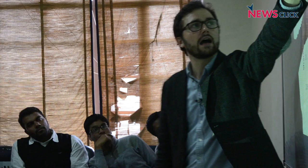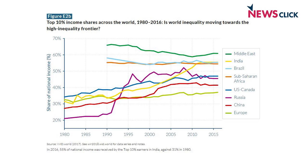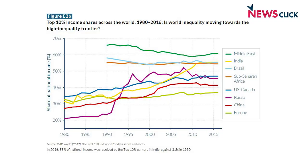Unfortunately, we don't have enough data for the longer historical period. But you can see that these regions seem to set what we could call a high inequality frontier, in the sense that levels of inequality are so high that it is hard to go even higher, at least as defined by the top 10% income share. And some countries seem to be returning to these extreme levels of inequality.